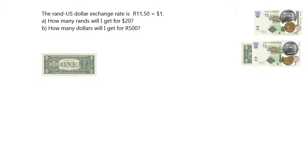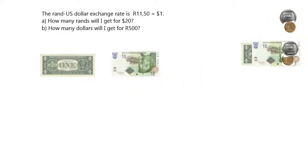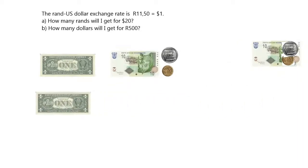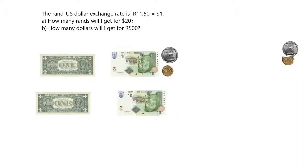For example, we could say the exchange rate between the rand and the US dollar is R11.50 equals $1. What that means is if you are going to go to America and you want to get some dollars so you have money there, for each dollar you want to buy, you have to pay R11.50.